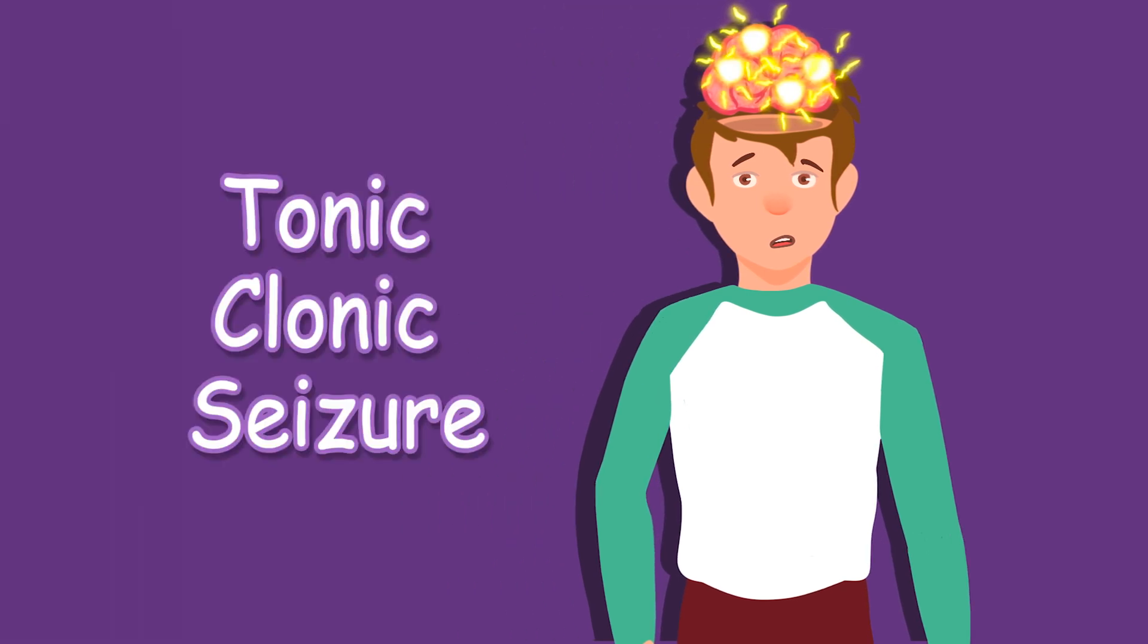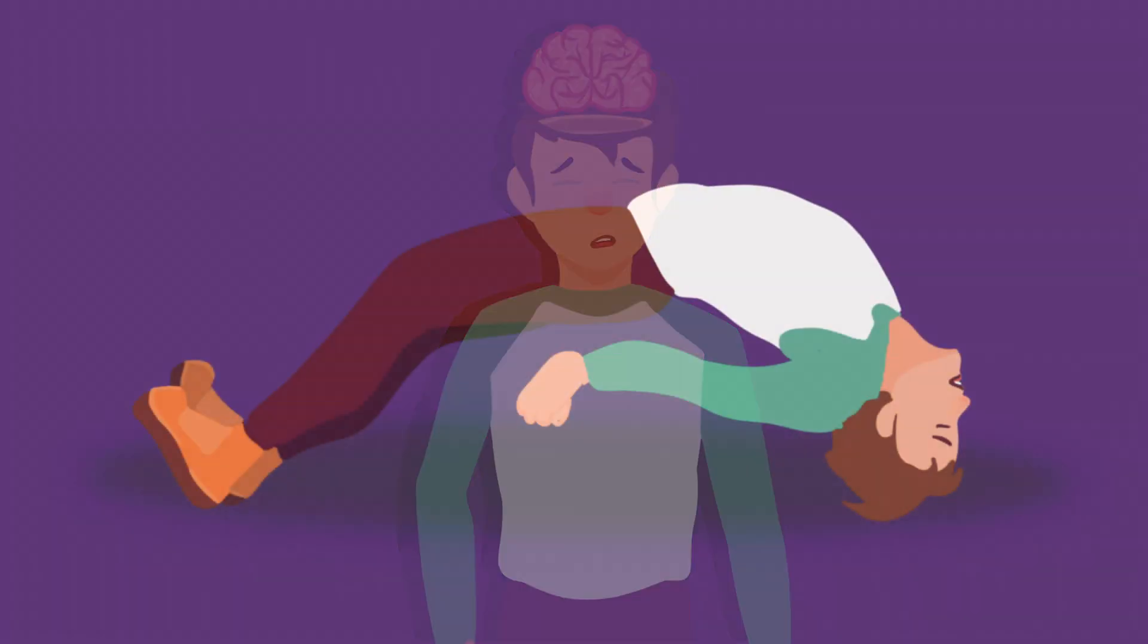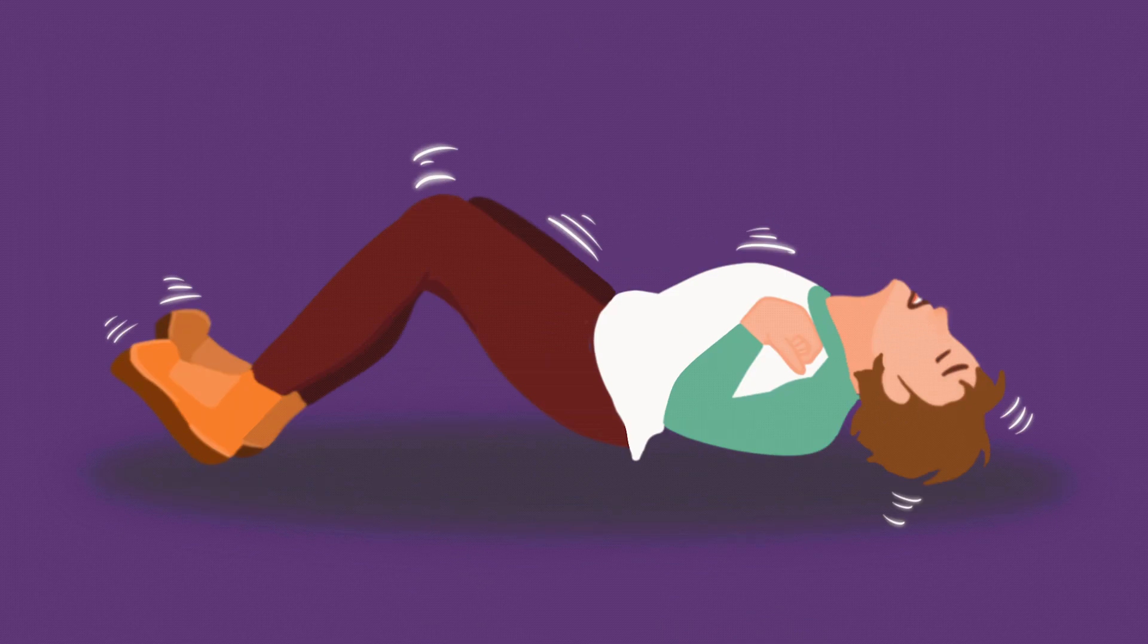The most common is the tonic-clonic seizure, also known as grand mal, which presents as loss of consciousness and muscle tension, followed by rhythmic muscle contractions all over the body.